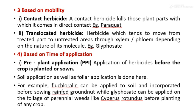Classification based on mobility. First is contact herbicide: a contact herbicide kills those plant parts with which it comes in direct contact. Example: paraquat. Second is translocated herbicide: a herbicide which tends to move from the treated part to untreated areas through xylem or phloem depending on the nature of its molecule. Example: glyphosate.